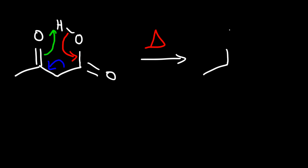And so we're going to have an O with a single bond to a hydrogen. So the green bond indicates that it came from those electrons. And here is a double bond. So this product is called an enol.